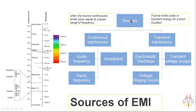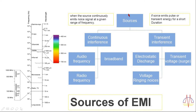Sources of EMI are broadly classified into two types: continuous interference and transient interference. Continuous interference is when a source continuously emits a noise signal at a given range of frequency. Transient interference is when a source emits pulse or transient energy for a short duration of time. In transient interference we have electrostatic discharge, transient voltage surge, and voltage ringing noises. In continuous interference we have audio frequency, radio frequency, and broadband signals.